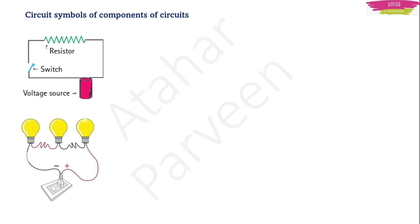This is called a complete circuit — electric current flows and the bulb glows. You have inserted a switch to control the circuit; you can turn it on or off as per your wish. The bulb glows because the filament inside gets heated up when current passes through it. So the main role here is the switch — it allows current to flow through the bulb. The switch is a very useful component: you can use it to turn the circuit on or off.